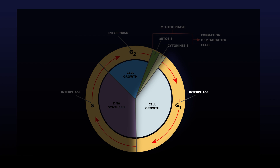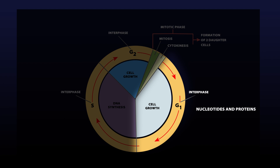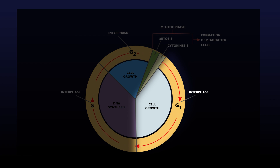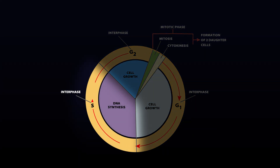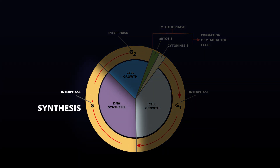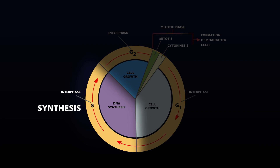During G1, the cell is putting together everything it needs to make more DNA, mainly nucleotides and proteins, which are mostly enzymes. Once the cell has all this stuff together, it can move into S phase. The S stands for synthesis because this is where the cell will synthesize a copy of the DNA for the new cell.